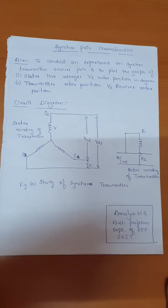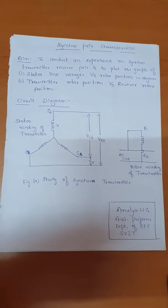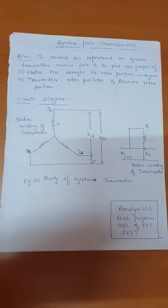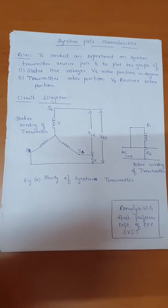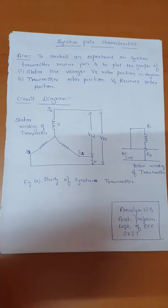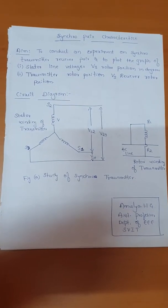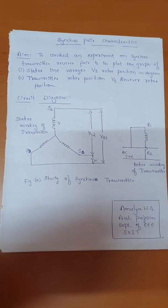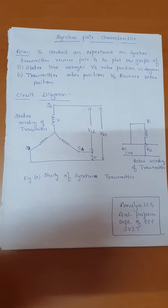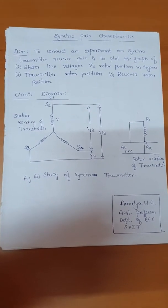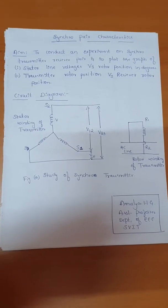Now let us see what actually a synchro is. Synchro is basically a three-phase star connected synchronous motor. It is also called an electromagnetic transducer. A transducer basically converts the angular position of the shaft into electrical signals. The shaft can be rotated from 0 degree up to 360 degrees, and this rotation can be converted into an electrical signal — it may be a voltage signal or a current signal.